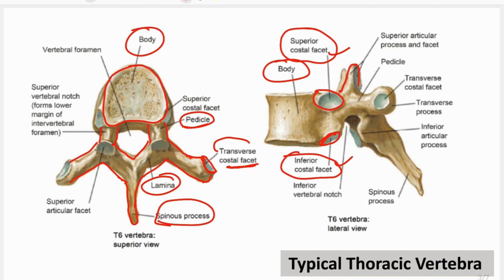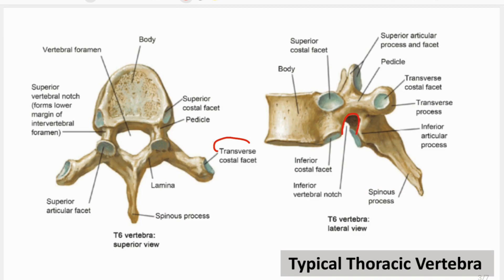You will also identify the superior articular process and the inferior articular process, along with their facets. Observe the spinous process of the thoracic vertebra — it lies obliquely, so the oblique direction of the spine is another way to identify the thoracic vertebra. Also, you will observe there is an inferior vertebral notch and a superior vertebral notch; the inferior vertebral notch is deeper compared to the superior vertebral notch.